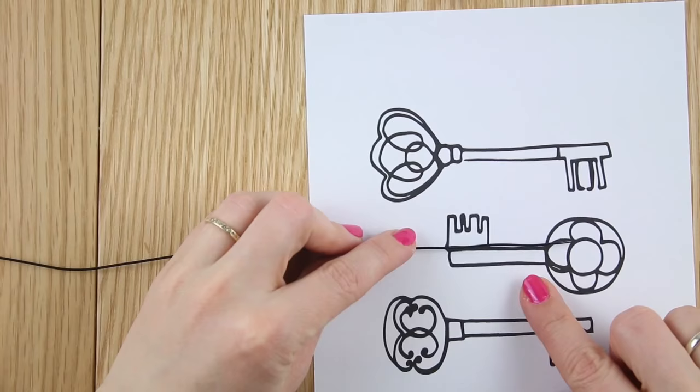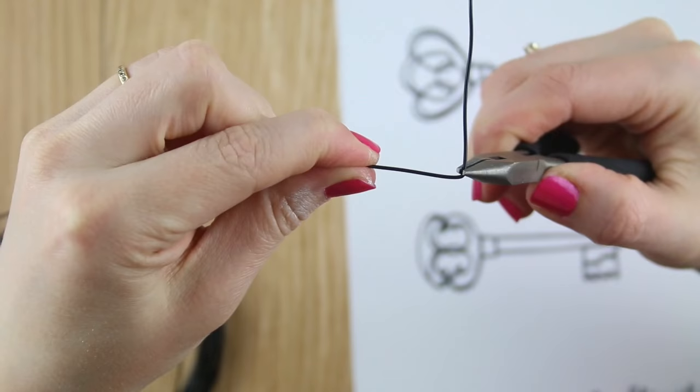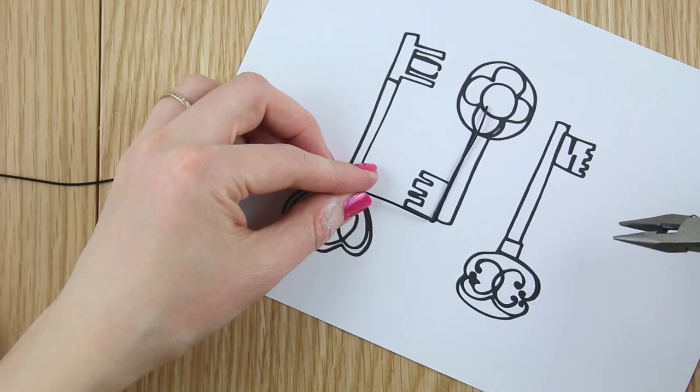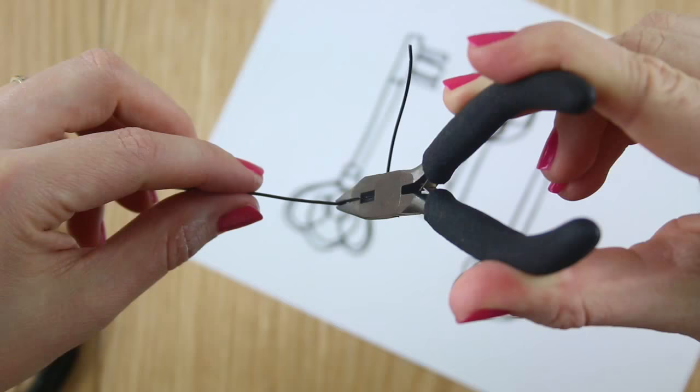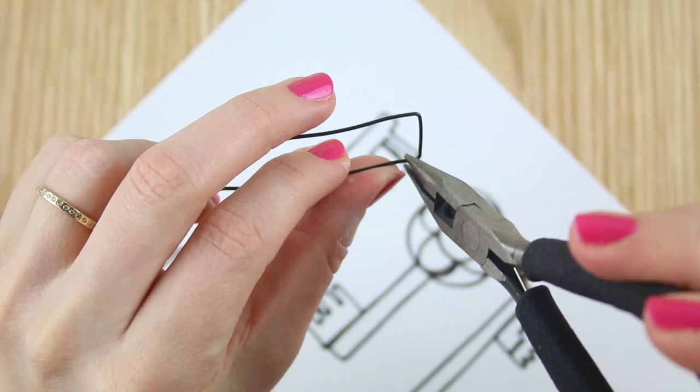Use the template as a guide and with the pliers bend the wire up to start the bit at the very bottom of the key. Hold the pliers against the corner and push the wire against them to make a clean corner. Continue along using the template as a guide. Use the pliers to make the teeth using the nose of the pliers to push against and use a guide for the width of each tooth.